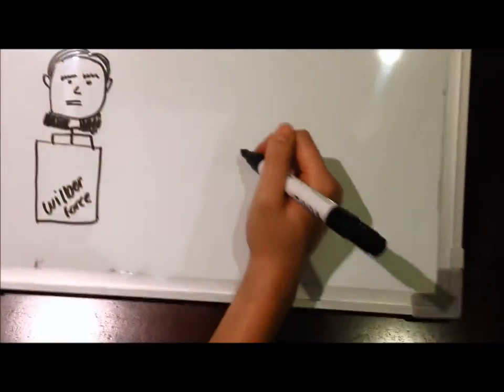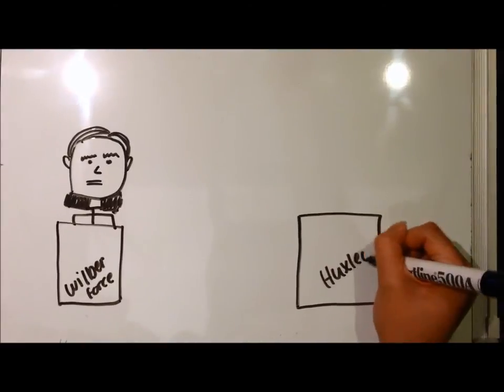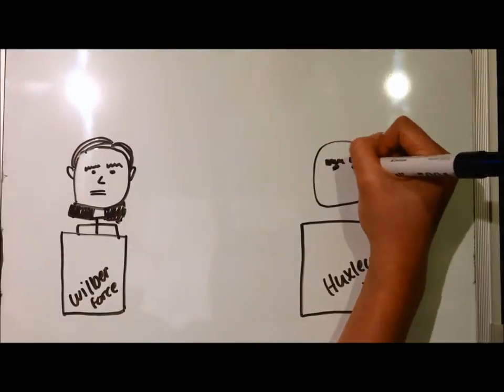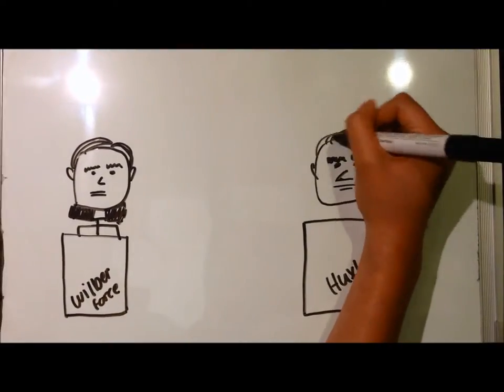Next, you have Thomas Huxley. This guy is an English biologist who was a die-hard fan of Darwin's book and even earned the nickname Darwin's Bulldog. On the 30th of June in Oxford, one of the greatest debates of all time took place.